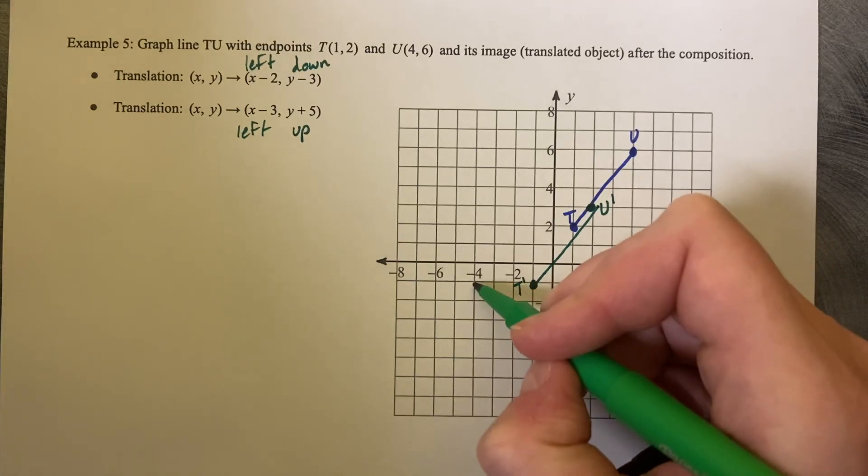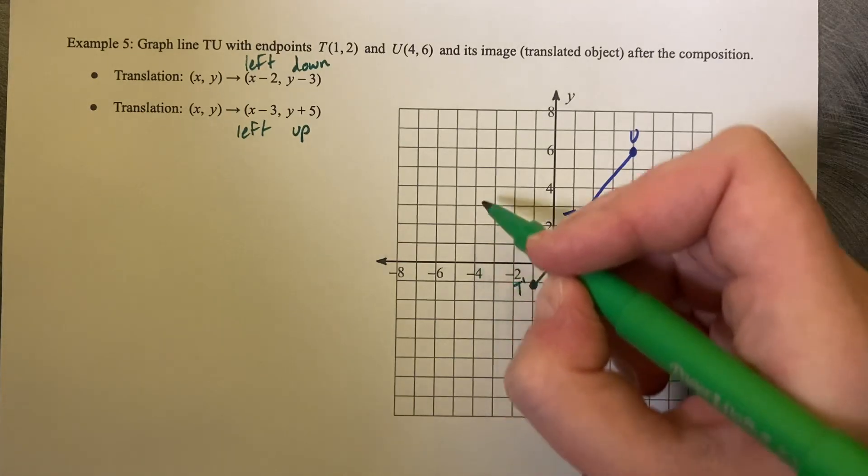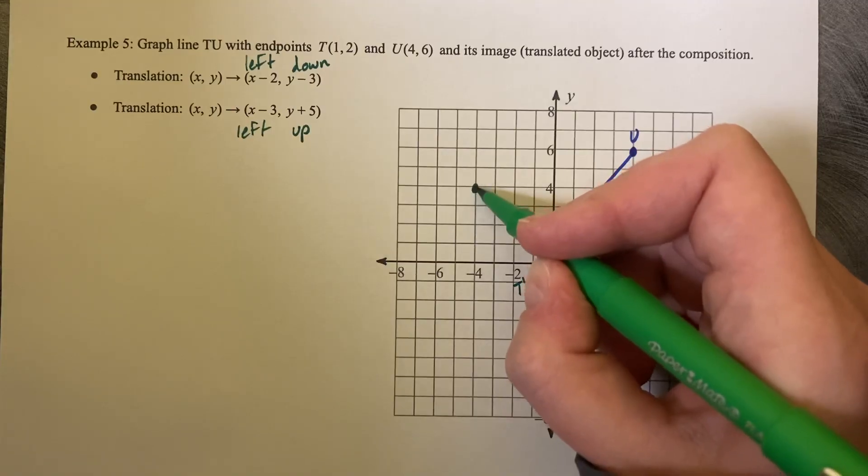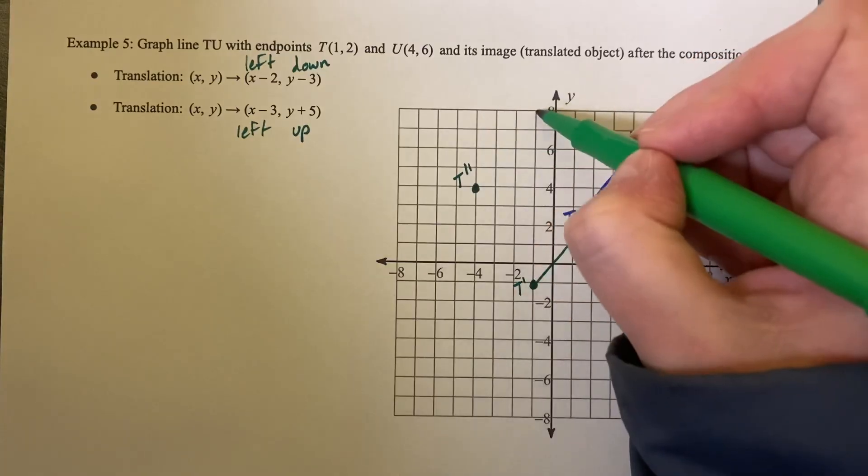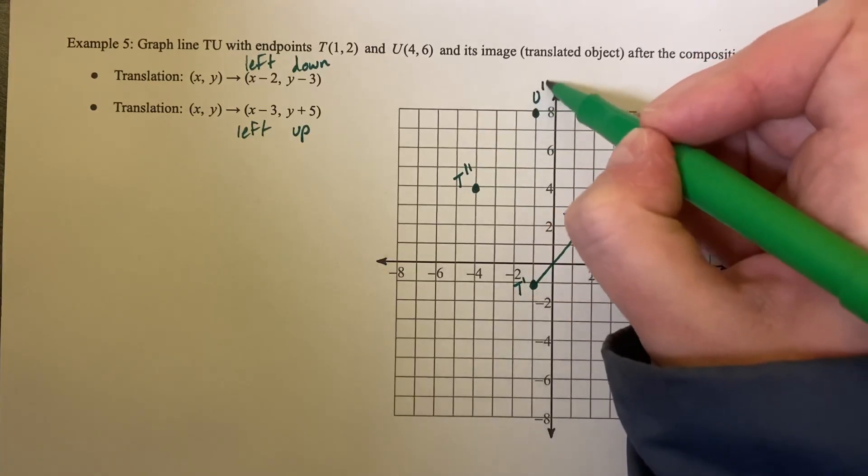So those kind of land, those are kind of on top of each other. And then we need to go left three and up five. So left three and up five: 1, 2, 3, 4, 5. So this is T double prime. And then we're going to go up four and over three to get U double prime.